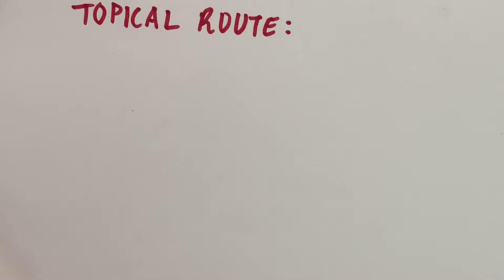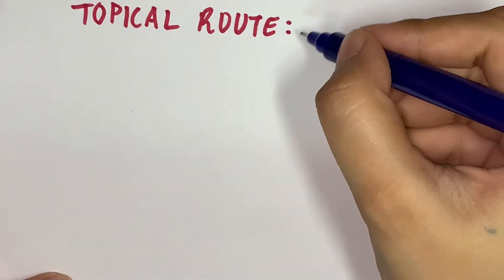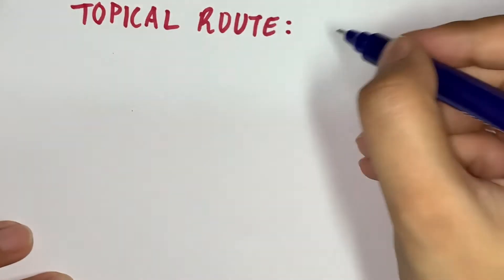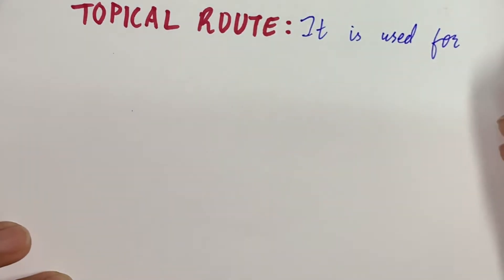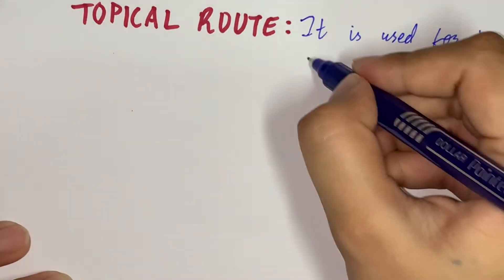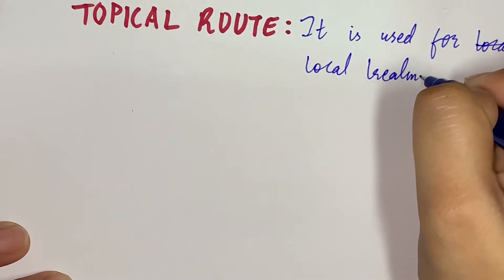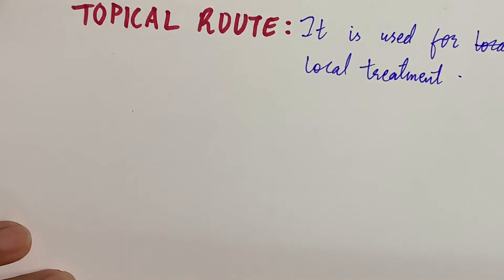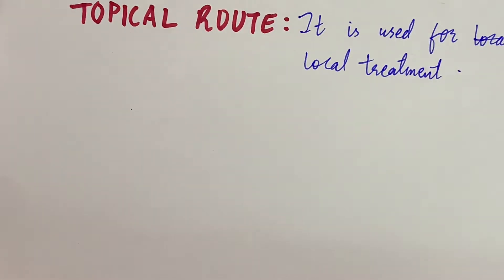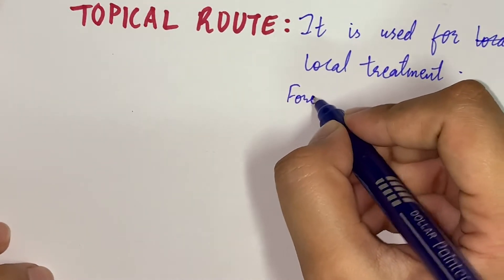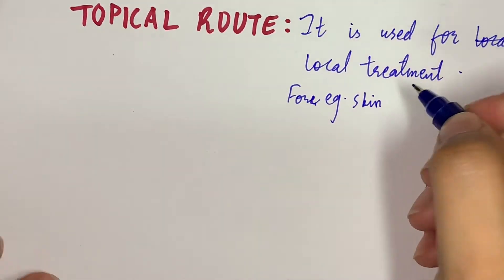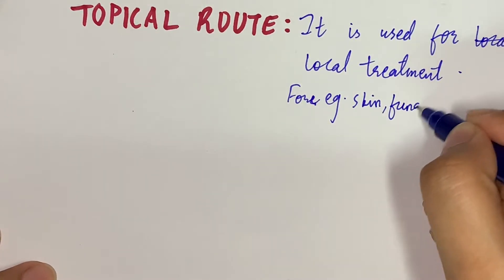Let's start with the topical route. If we define the topical route, it is used for local treatment. We use local treatment directly into the organ, like the skin — for example, skin fungal and bacterial infections.